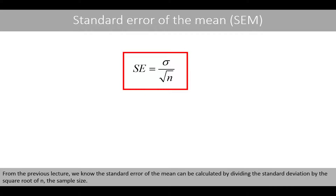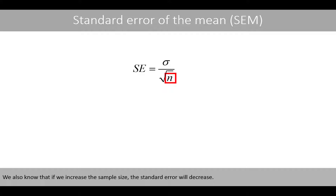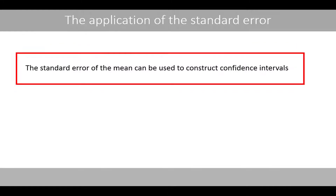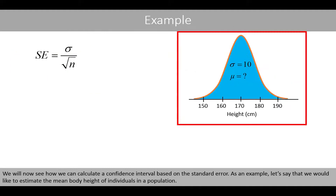From the previous lecture, we know that the standard error of the mean can be calculated by dividing the standard deviation by the square root of n, the sample size. We also know that if we increase the sample size, the standard error will decrease. However, how can we make use of the standard error of the mean? The standard error of the mean can be used to construct confidence intervals. We'll now see how we can calculate the confidence interval based on the standard error.